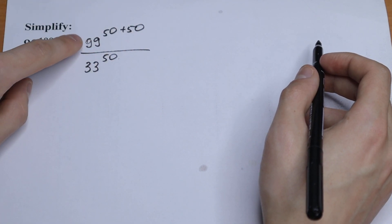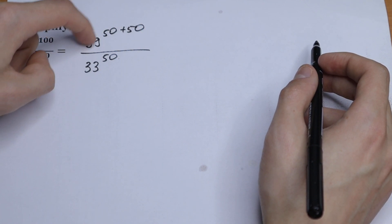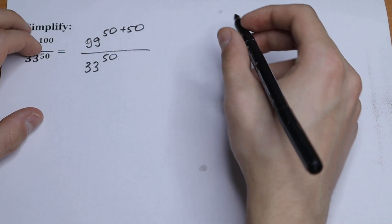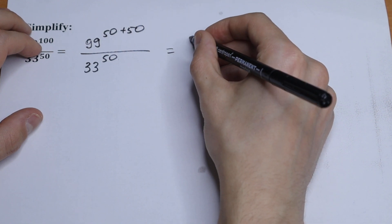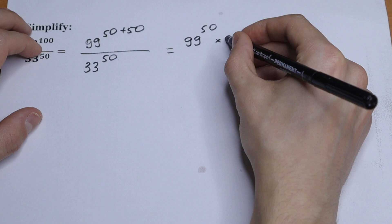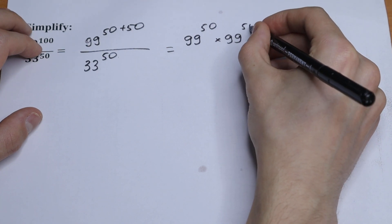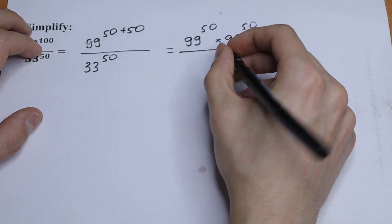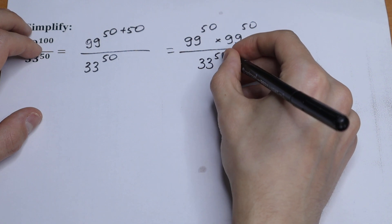We all know the rule. If we have a to the power x plus b, we can write it as a to the power x times a to the power b. So as a result we will have 99 to the power 50 times 99 to the power 50 as well, and all over 33 to the power 50.